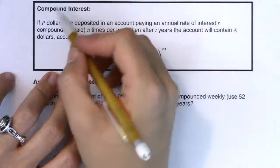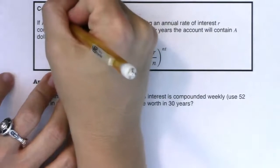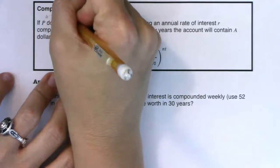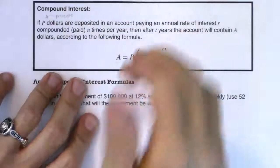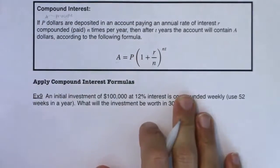Alright, so this first one, it says if P dollars are deposited into an account, you will frequently hear this referred to as principal. Alright, so this type of savings account is when you make a one-time deposit. You put a chunk of money into a savings account and you let it sit for however many years you feel like letting it sit.